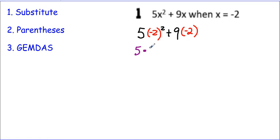So 5 times negative 2 times negative 2 is a positive 4, plus 9 times negative 2. Now we're going to multiply. 5 times 4 is 20, plus 9 times negative 2 is negative 18. Now we can add, and our answer is 2.